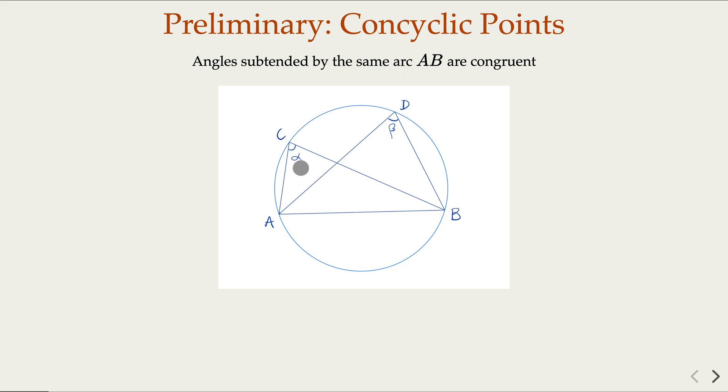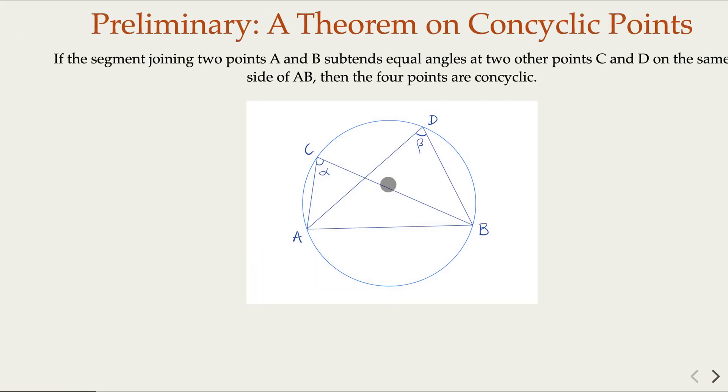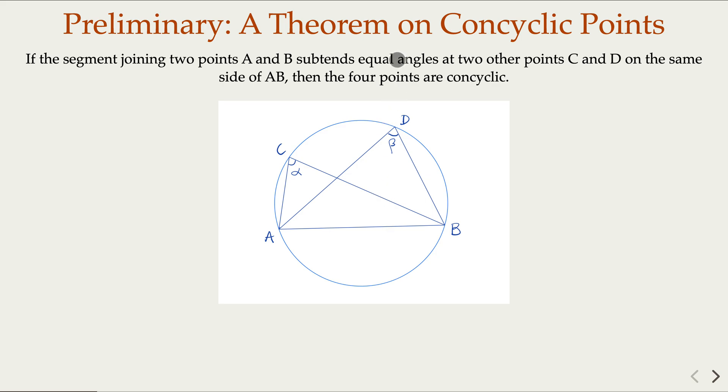The angle subtended by the same arc AB is the same. In this case, alpha equals beta. Another thing is that the converse is true - if alpha equals beta, then ABCD would be on a circle. We're not going to prove this.